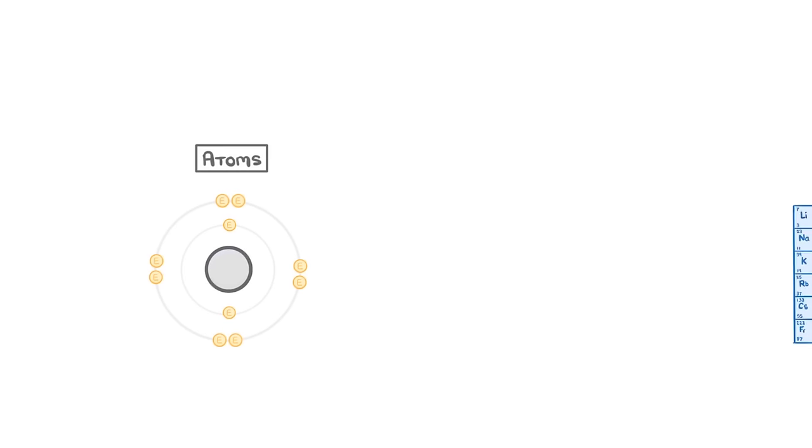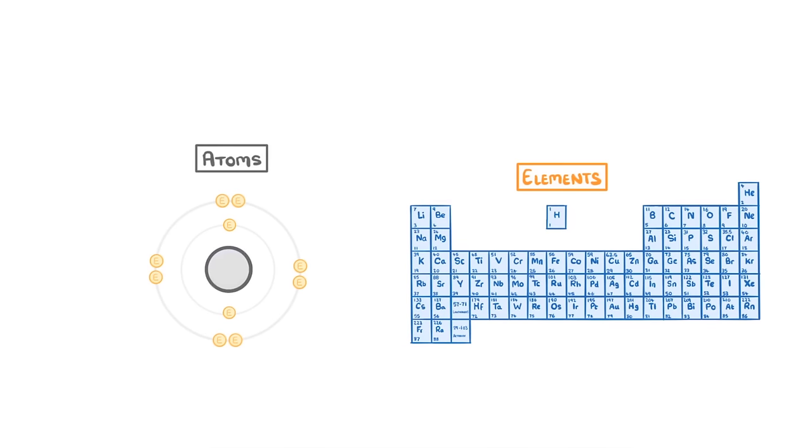Now that we know what atoms and elements are, we need to take a look at how atoms actually exist in the real world. And to do this, there are three important terms to understand: molecules, mixtures, and compounds.